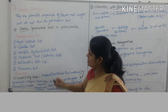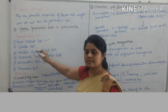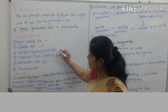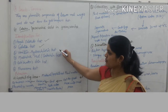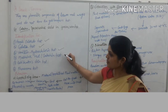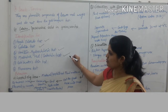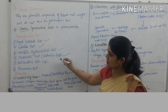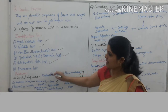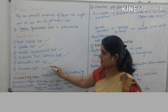The identification tests for tannins are as follows: First, ferric chloride test. Second, gelatin test. Third, vanillin hydrochloric acid test. Fourth, Stiasny test. Fifth, alkaline catechu test. Sixth, Goldbeater skin test, and seventh, phenazone test.